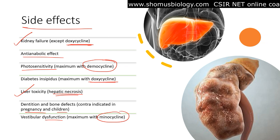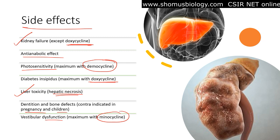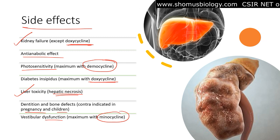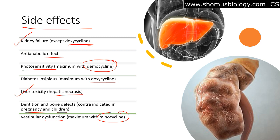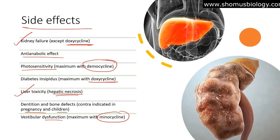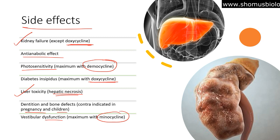Although tetracycline is a very good antibiotic against Rickettsia, Chlamydia, Lyme disease, and many other infections, it must be used with maximum precaution because of its serious side effects. However, if the side effects are managed and it is used in combination with other antibiotics, tetracycline group of antibiotics are very effective in treating a wide range of infections.